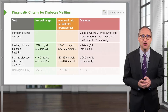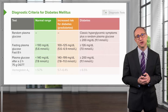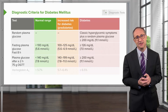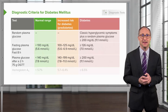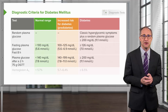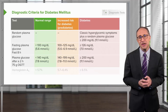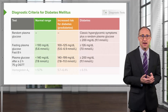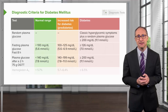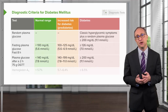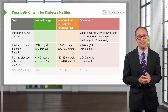Plasma glucose during a two-hour 75-gram oral glucose tolerance test under normal circumstances should be less than 140 milligrams per deciliter. In pre-diabetes, this will range between 140 and 199, and in overt diabetes, greater than 200 milligrams per deciliter.